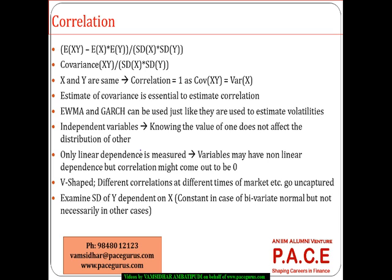When it comes to correlation, the formula defines the correlation between two variables as the covariance between the two divided by the standard deviation of both of them separately — that is, the multiplication of the standard deviations of each one of them. That is what brings the world of correlation together.